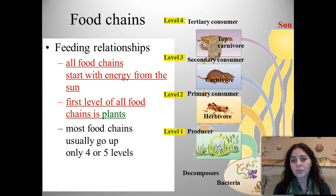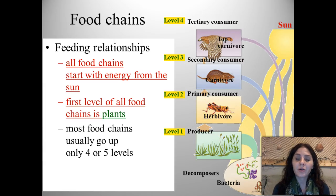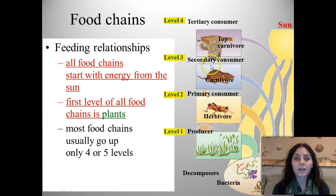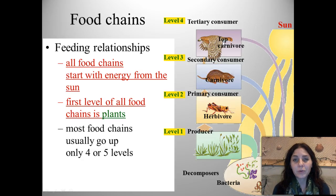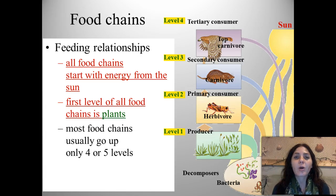Plants are called producers. What eats plants, or herbivores, are typically called the primary consumer. Primary consumers are eaten by secondary consumers. Secondary consumers are eaten by tertiary consumers. And if we were to add one more level, we would say that tertiary consumers are consumed by quaternary consumers.